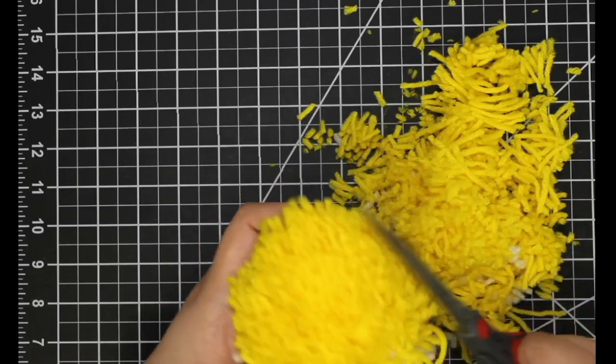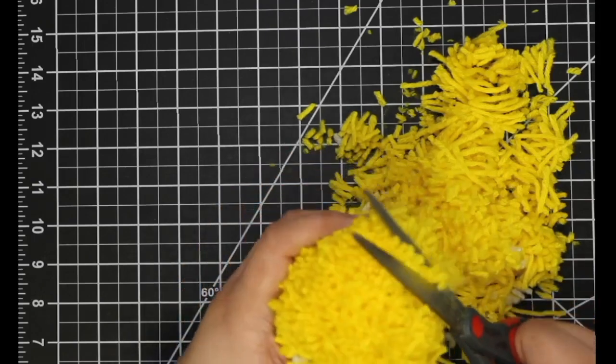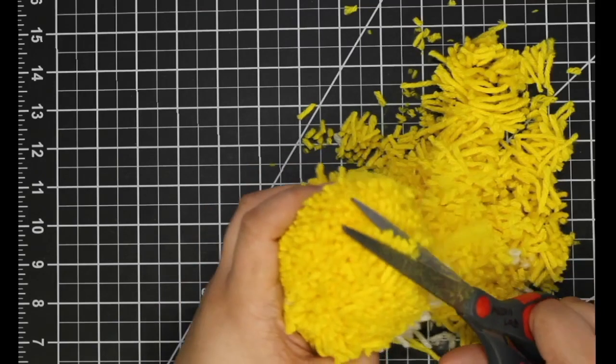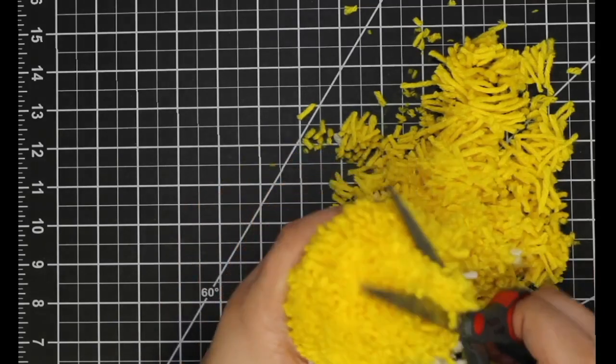You will want to trim your yarn into an oval shape reminiscent of an egg. This process may take a while to complete as you work to achieve your desired shape and size.